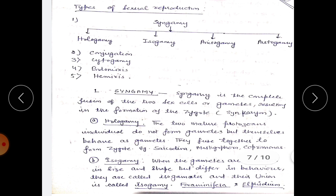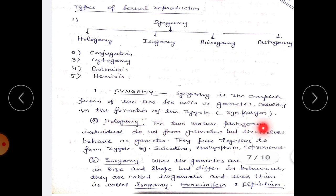Types of sexual reproduction in unicellular eukaryotes include: syngamy, endomixis, and hemiixis. Syngamy is of the following types: hologamy, isogamy, anisogamy, and autogamy. Syngamy is the complete fusion of two sex cells or gametes resulting in formation of a zygote, known as synkaryon. In hologamy, two mature protozoan individuals do not form gametes but themselves behave as gametes, fusing together to form a zygote — occurring in Sarcodina, Mastigophora, and Copromonas.